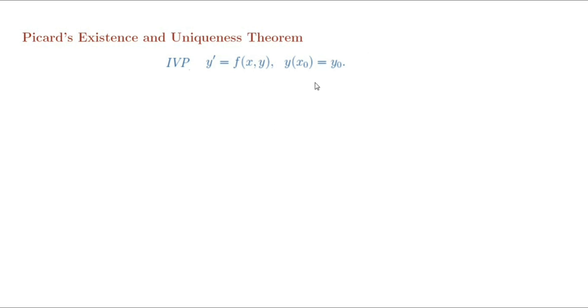What is the statement of Picard's Existence and Uniqueness? Suppose f(x,y) be a function and its first-order partial derivative with respect to y, ∂f/∂y, are continuous functions in some open rectangle where x lies between a and b, y lies between c and d that contains the point (x₀, y₀). Then the initial value problem has a unique solution in some closed interval where h is positive.